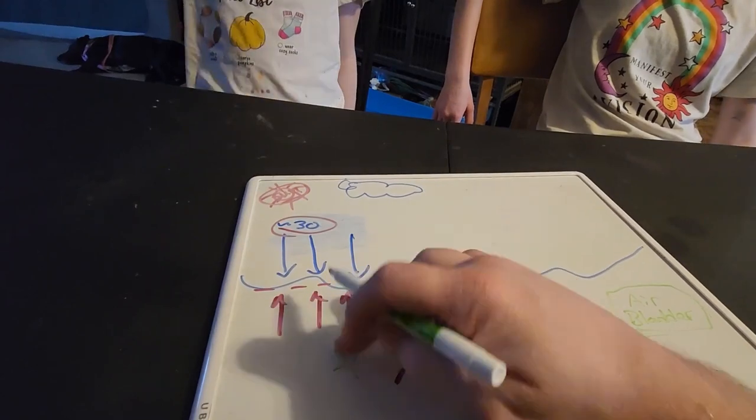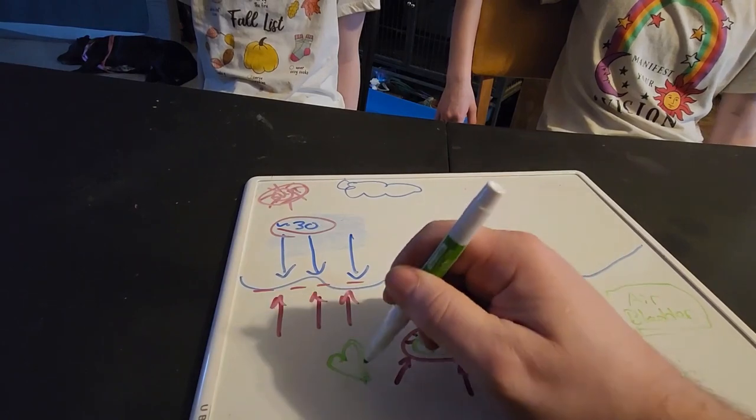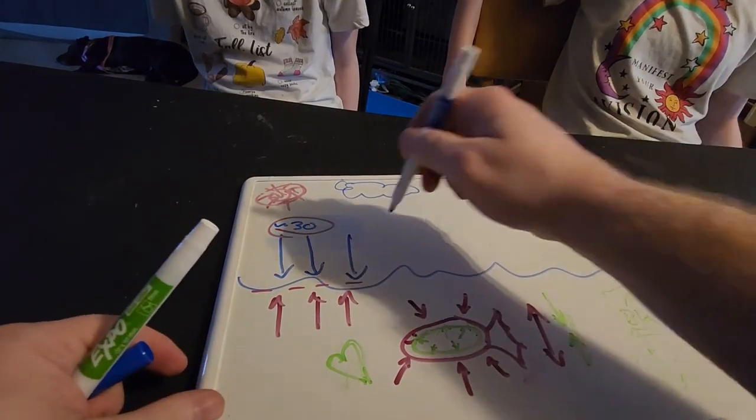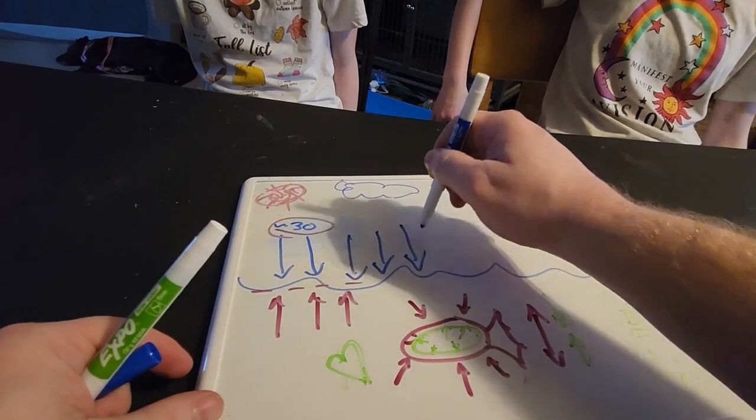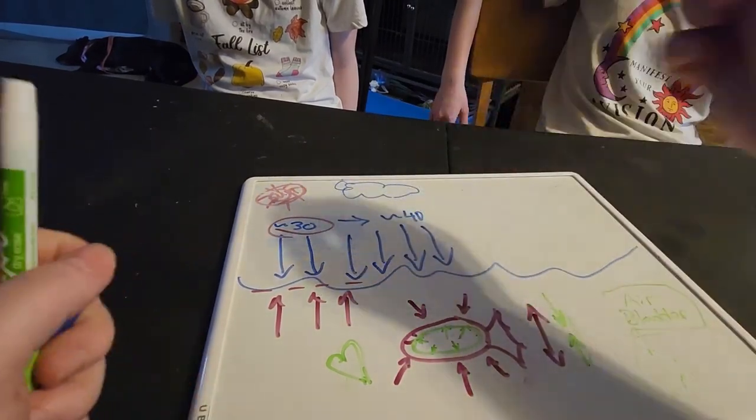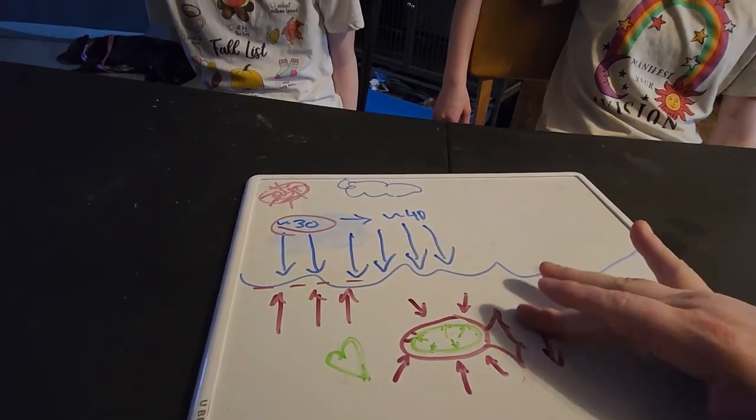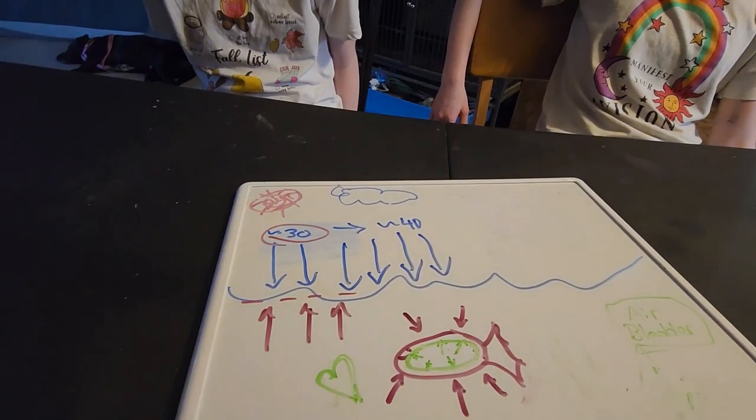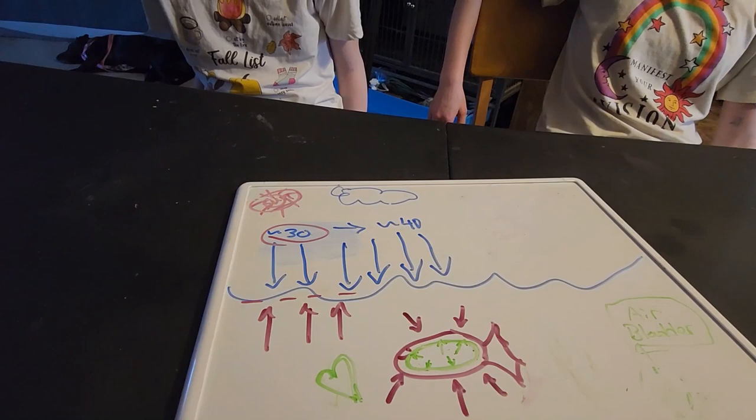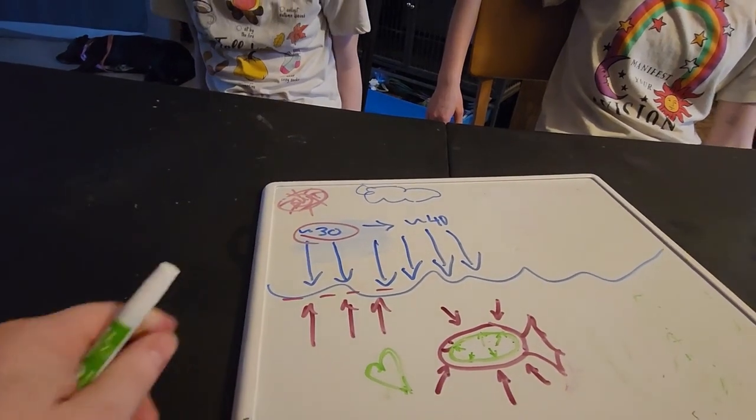The fish is fat and happy at 30. It's a nice sunny day and the fish is nice and happy. What do you think happens if we increase the pressure to, say, about 40? Which way is the fish going to go? Up or down? To meet its optimum pressure. Remember, it wants to stay in the heart. Is it going to go up or down?